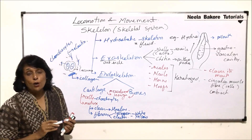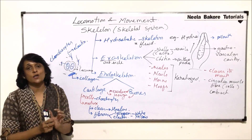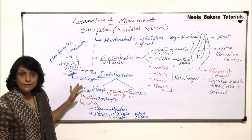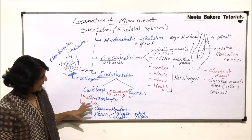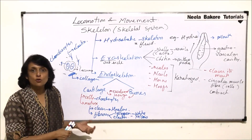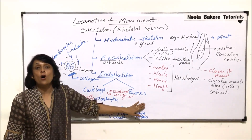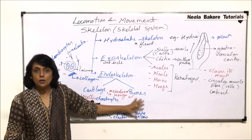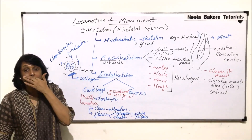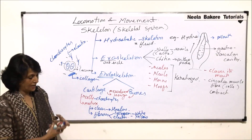In vertebrate embryos, the first skeleton formed is cartilaginous. After that, calcium salts are deposited in the matrix — a process known as ossification — and the cartilage gets replaced by bone.